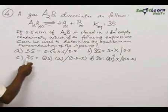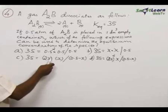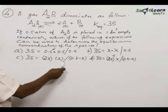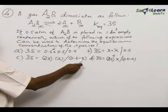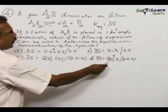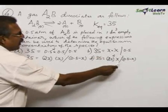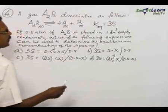Option C: 35 = 2x × x / (0.5 - x). Option D: 35 = (2x)² × x / (0.5 - x).